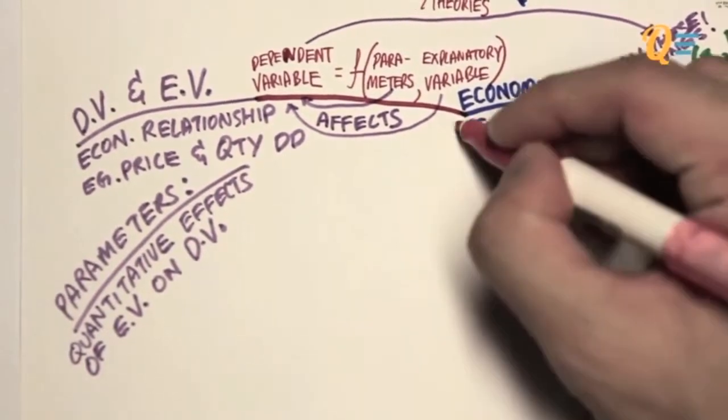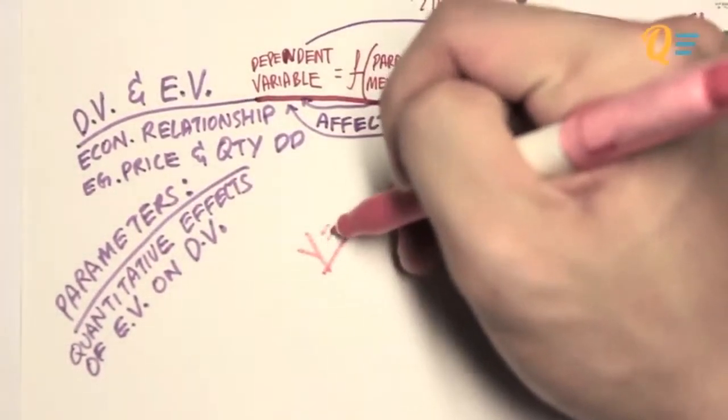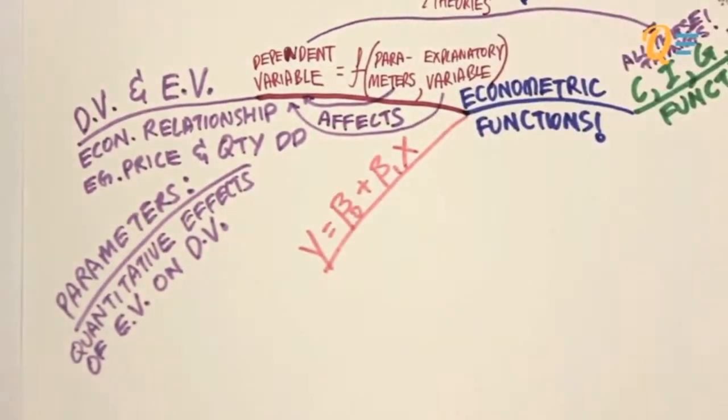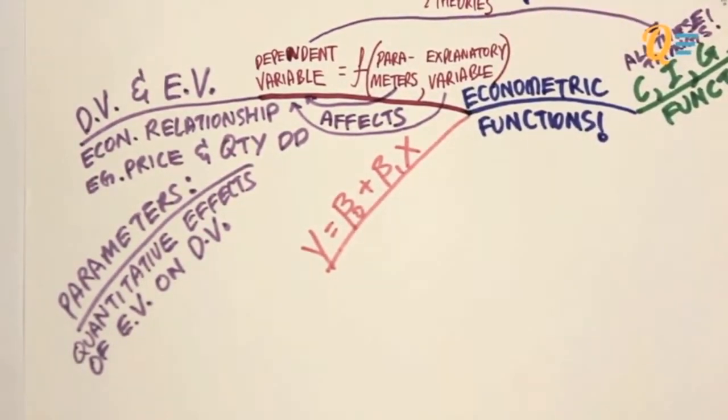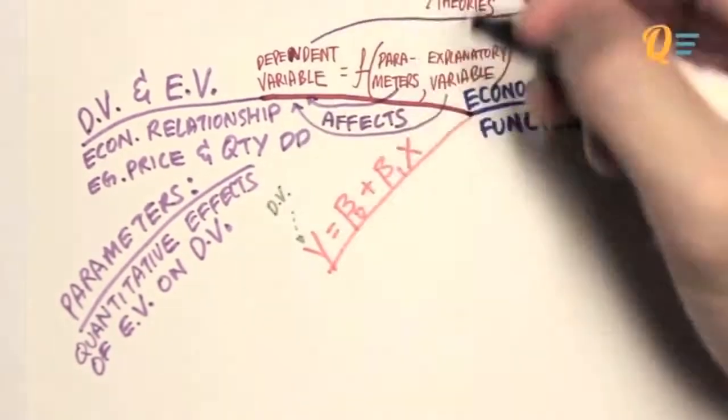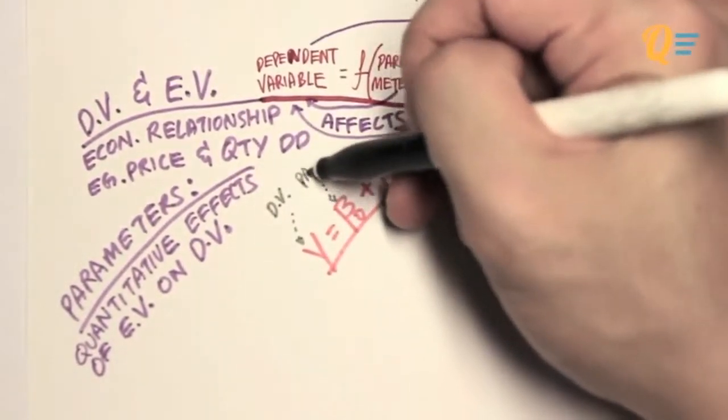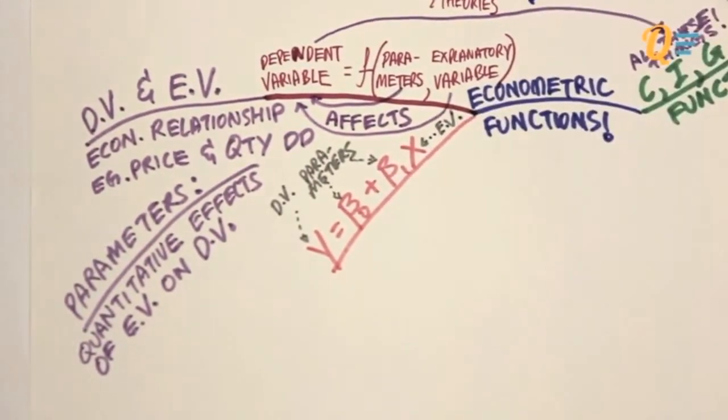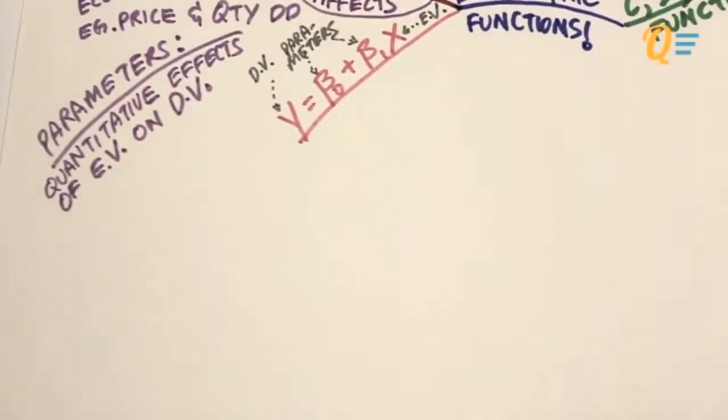If you're still confused at this point, not to worry. Just let me give you a simple example of an econometric function, which is y equals to beta0 plus beta1 times x. So y over here is the dependent variable, beta0 and beta1 are your parameters, and x is simply going to be your explanatory variable.